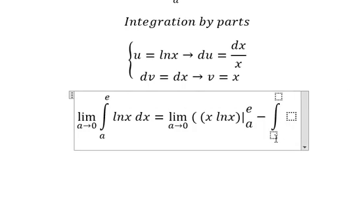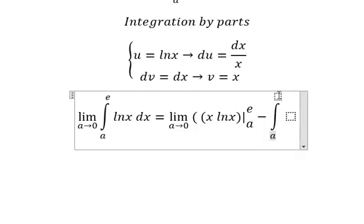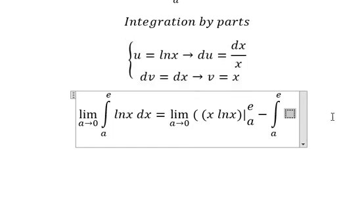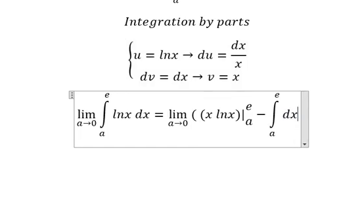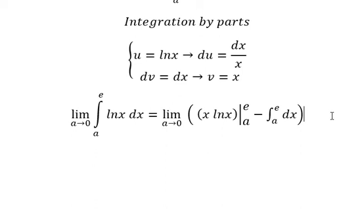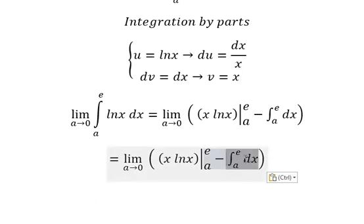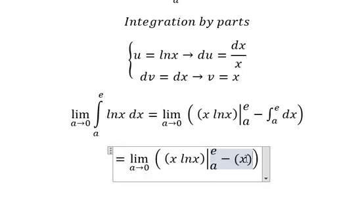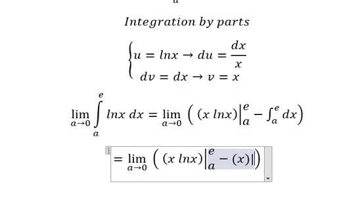We have the integration from a to e of x divided by x, which gives us one. So this one, we have x with the bounds from a to e.